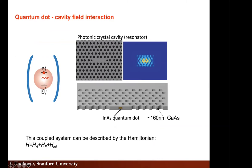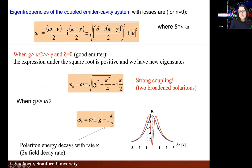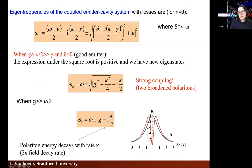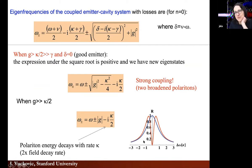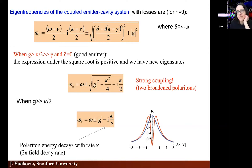Student question: What is the y-axis of that plot? The y-axis is transmission through the system — or it could be reflectivity, depending on how you collect the signal. It's just the signal from the cavity. It could also be luminescence if you have active material there. Reflection and transmission are essentially the same thing depending on where you put your detector.